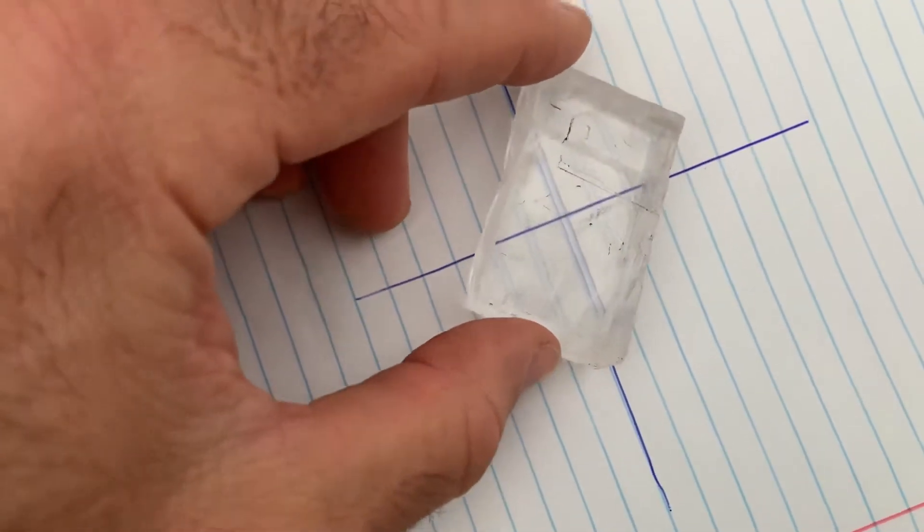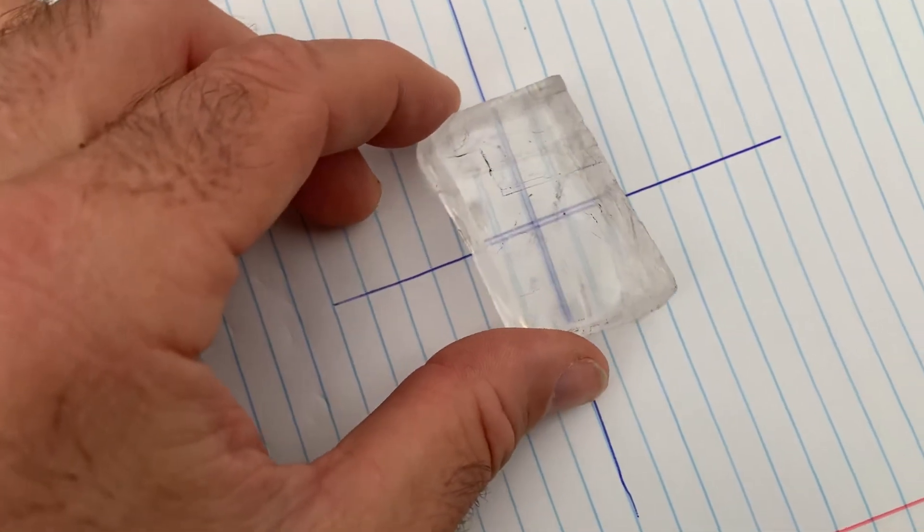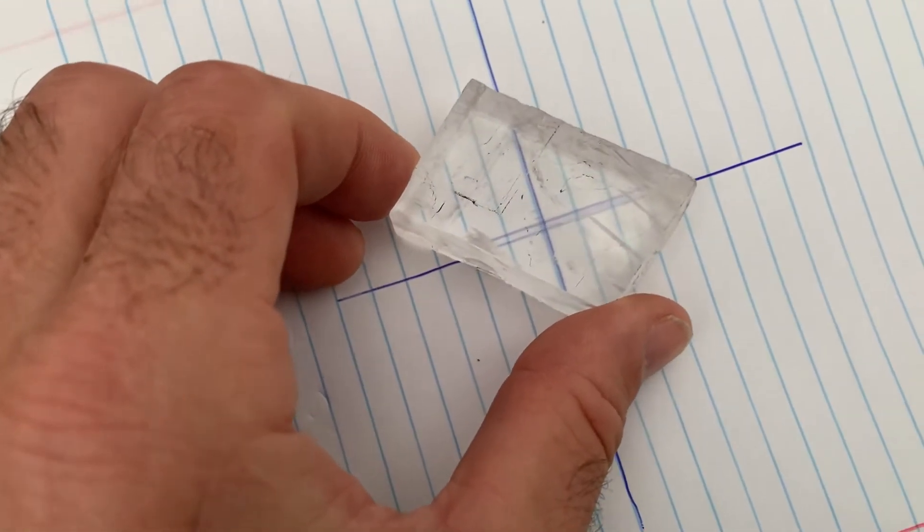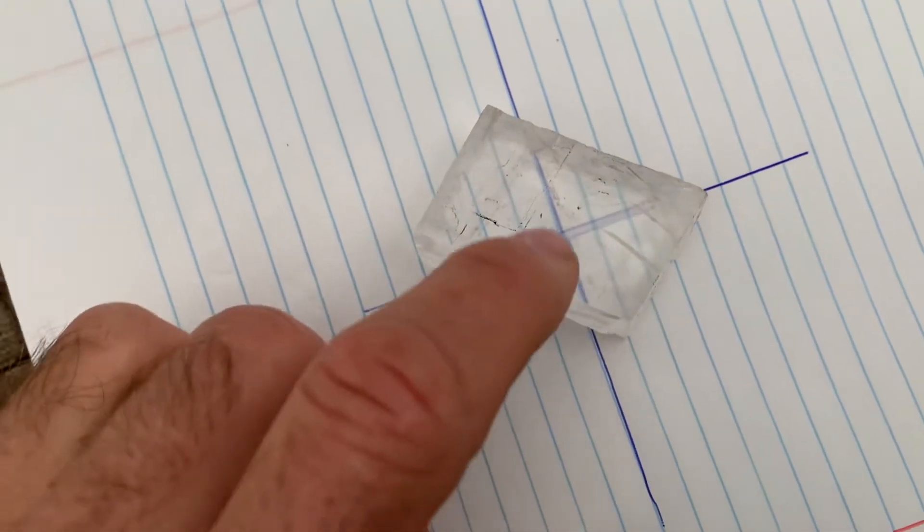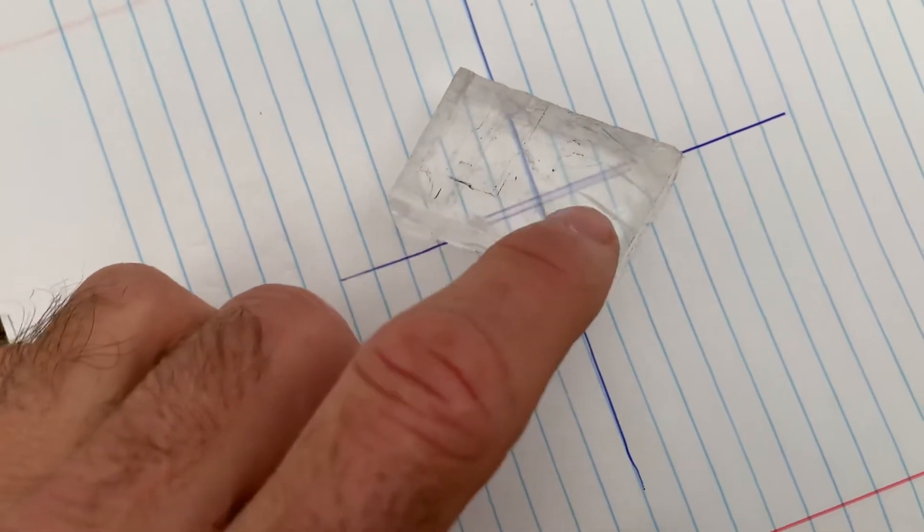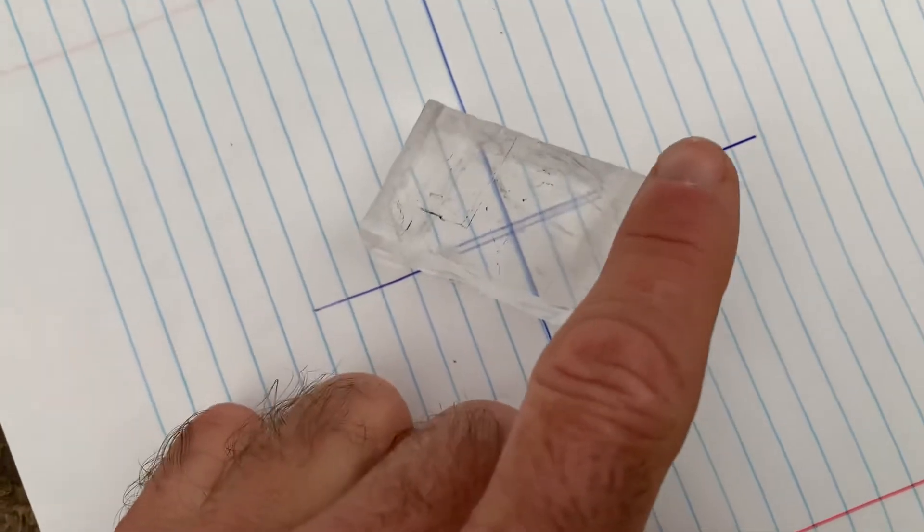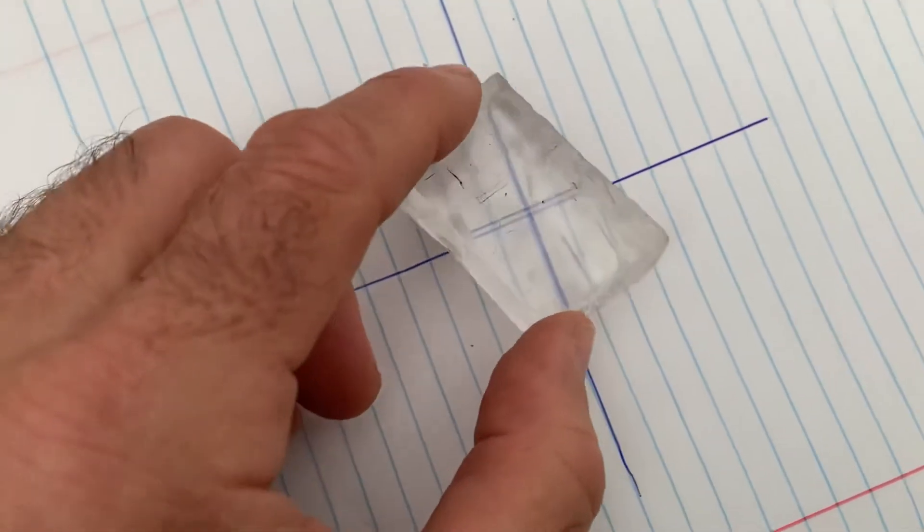If you turn this and you get the other edge around, you notice how this line becomes solid and that one becomes double, again saying that the sun is in that direction.